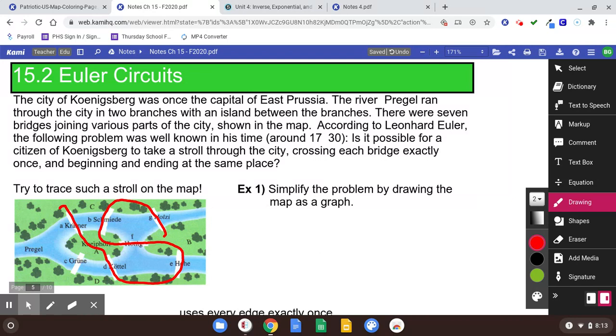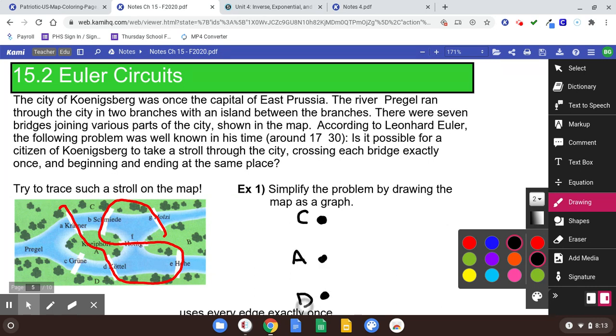Example one says simplify this problem by drawing the map as a graph. So you've got four landmasses here. I'm going to draw point C, point A, point D, and then over here I'm going to draw point B.